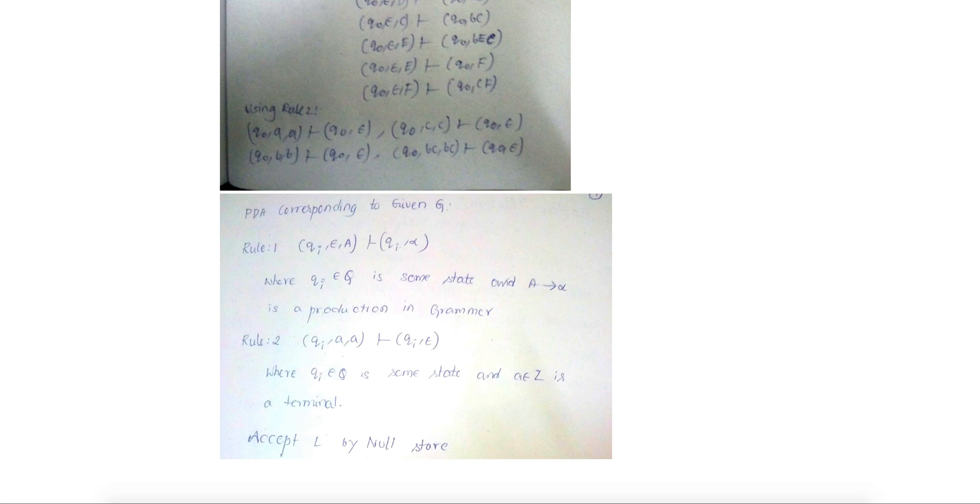Rule 2: q i a a plus q sub i epsilon, where q sub i is some state, and a is a terminal. Accept L by null store.